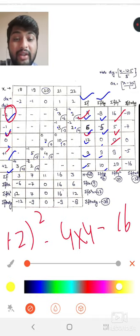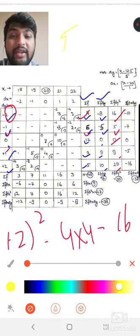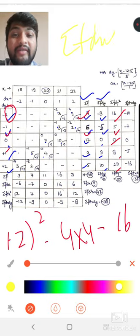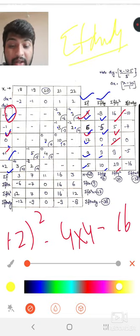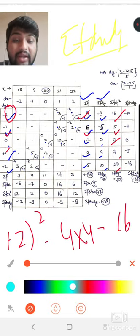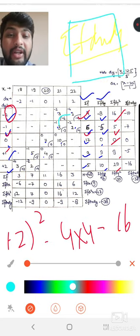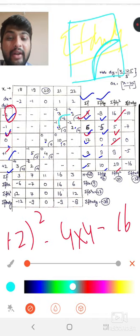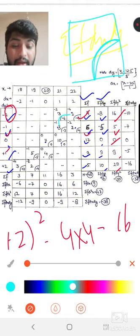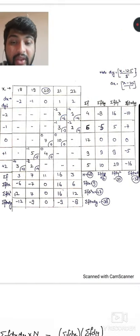Now you need summation f dx dy. This value you need, summation f dx dy. Now how will you calculate this value? In each block, in the bracket you made, the left side circled values you have to add.